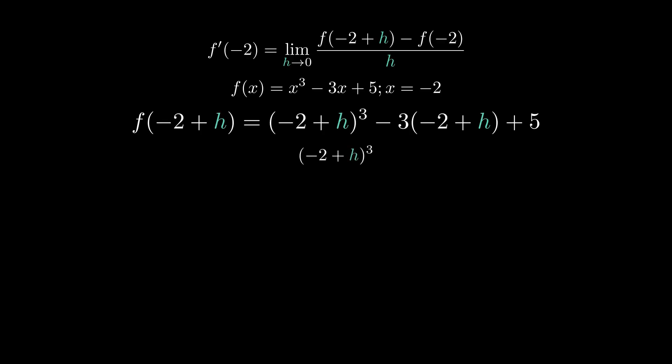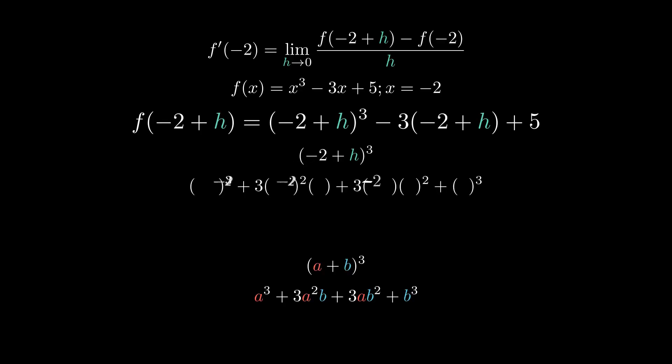This is a prime example because we have negative 2 plus h cubed. You could multiply that out three times, but it's helpful to know a formula. In general, if we have something in the form of a plus b cubed, we can expand that to become a cubed plus 3 times a squared times b plus 3 times a times b squared plus b cubed. In our case, our a is going to be negative 2 and our b is going to be h. So when we plug that in, that'll become negative 2 cubed plus 3 times negative 2 squared times h plus 3 times negative 2 times h squared plus h cubed.